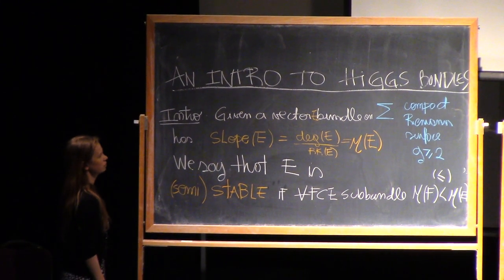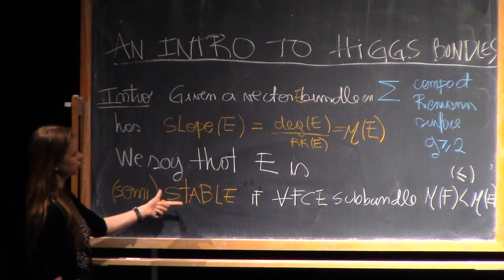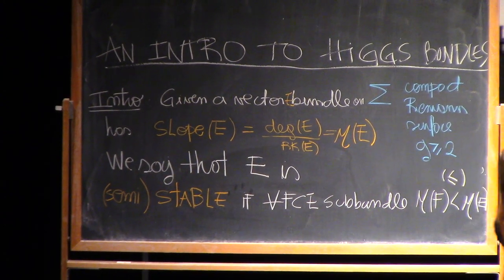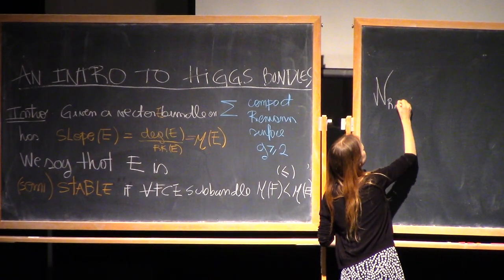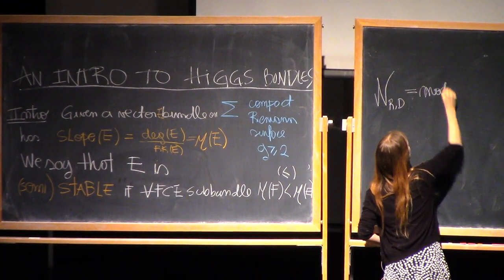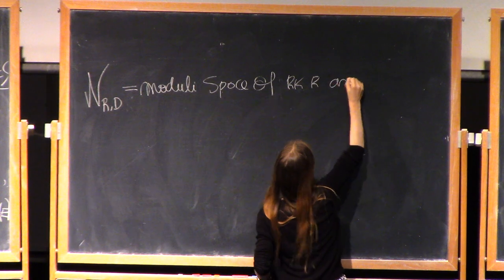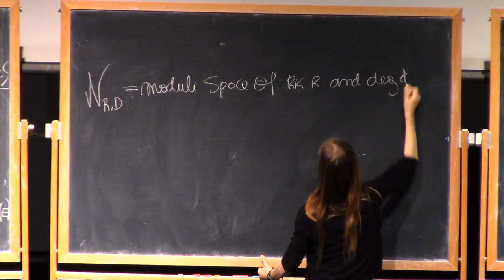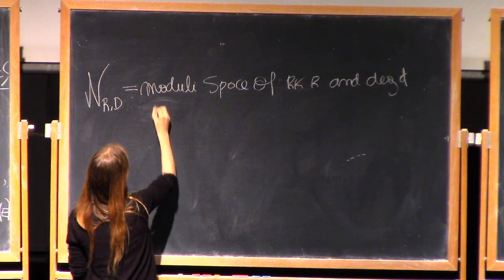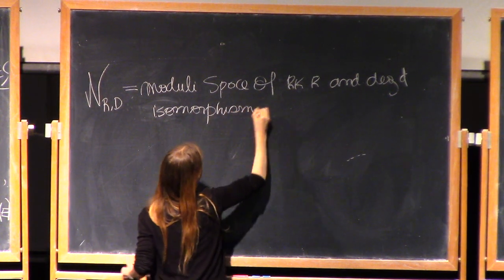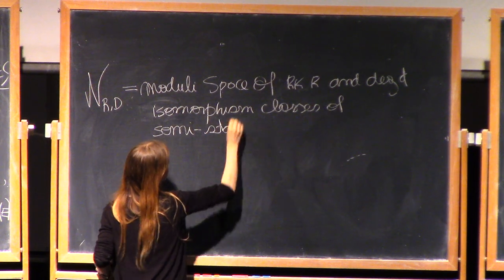This is a stability condition that we need in order to construct the moduli space of vector bundles. Once we have the stability or semi-stability condition, we can look at isomorphism classes of vector bundles with fixed rank and degree. We call this N — with rank R and degree D — the moduli space of rank R and degree D vector bundles, specifically of isomorphism classes of semi-stable bundles.